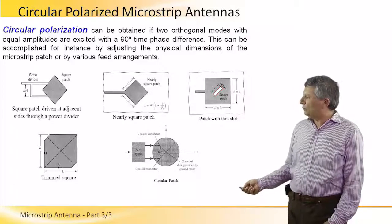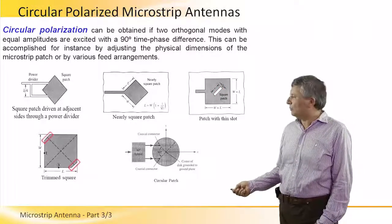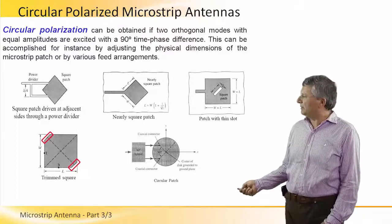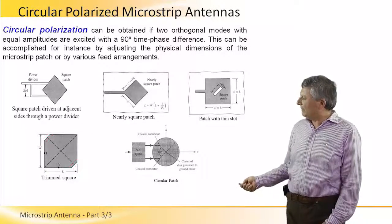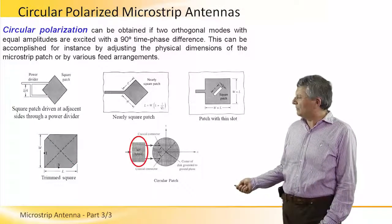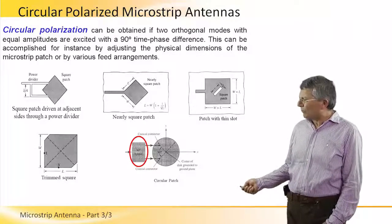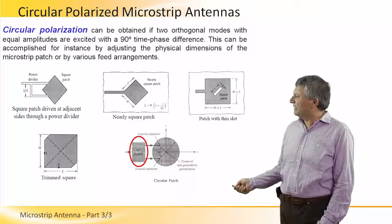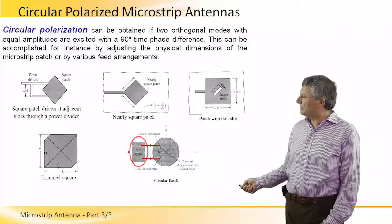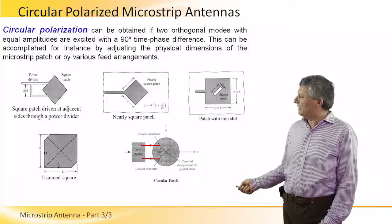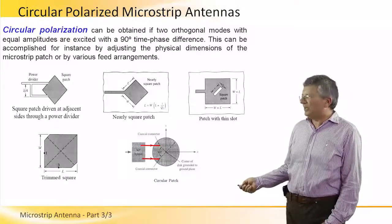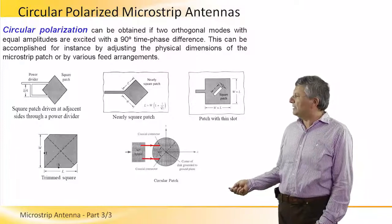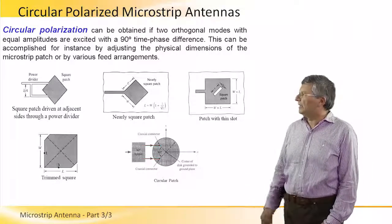Another way to obtain the two excited modes with 90-degree phase difference is by trimming the corners of the patch. And finally, if we have a circular patch antenna, we can use a hybrid — a power divider with 90-degree phase difference — which excites two points separated by 90 degrees inside the cavity domain. The hybrid contributes the 90-degree phase difference, and in this way we obtain circular polarization.